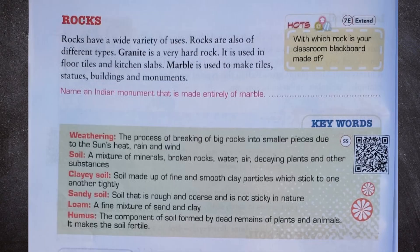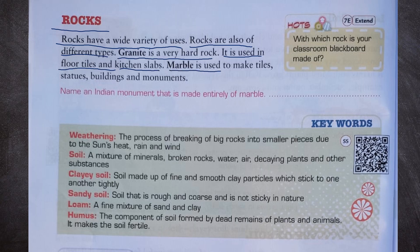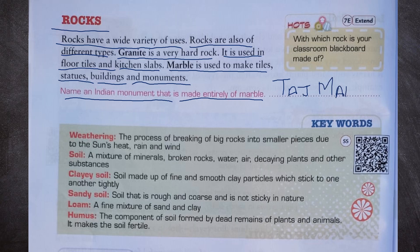What are rocks? Rocks have a wide variety of uses and are of different types. Granite is a very hard rock used in floor tiles and kitchen slabs. Marble is used to make tiles, statues, buildings, and monuments. The Taj Mahal, situated in Agra, is an Indian monument made entirely of marble. The classroom blackboard is made of slate stone.